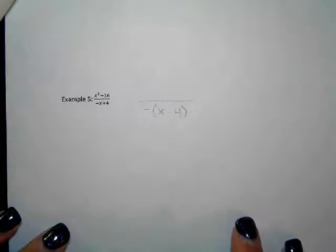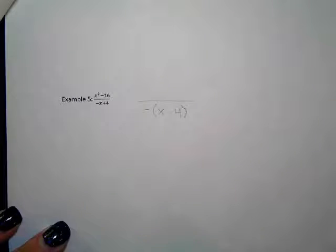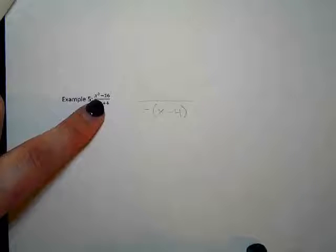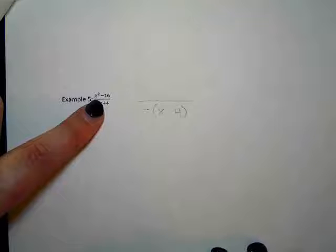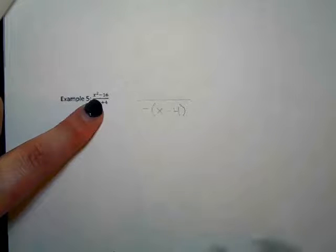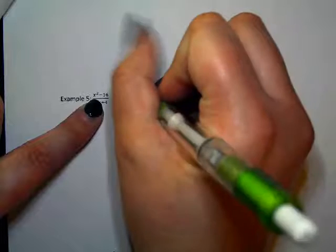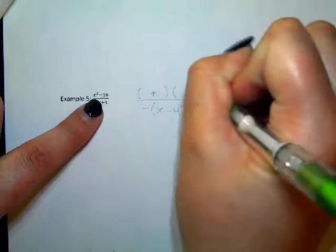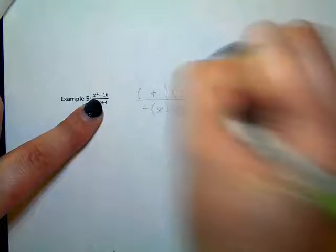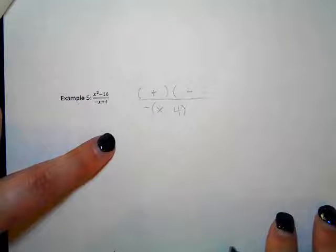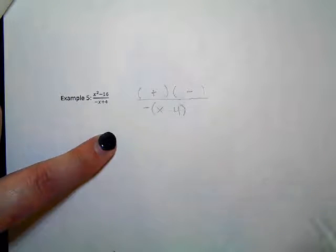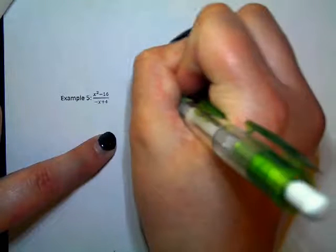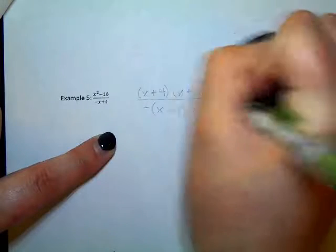What type of factoring is it on the top? Difference of squares. So we have X squared minus 16. 16 is a perfect square, so on the top we're going to have two sets of parentheses — one with a plus and one with a minus. So what are our two parentheses on the top? X plus four, X minus four.